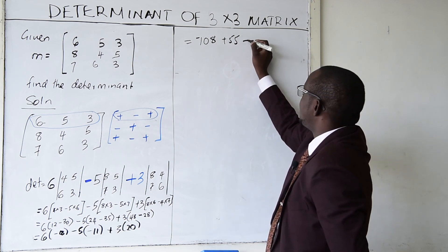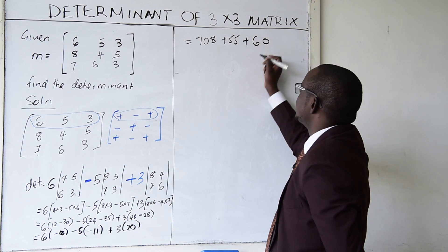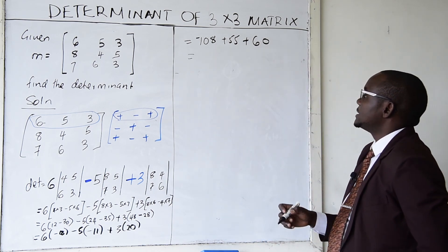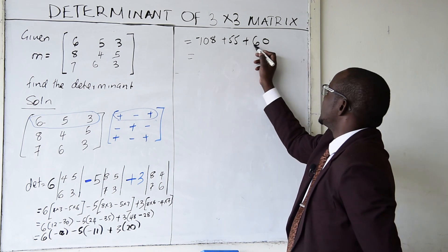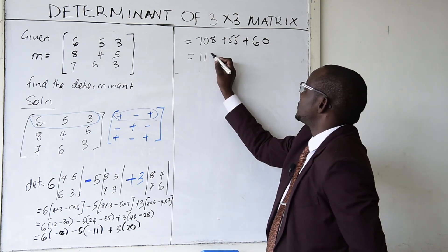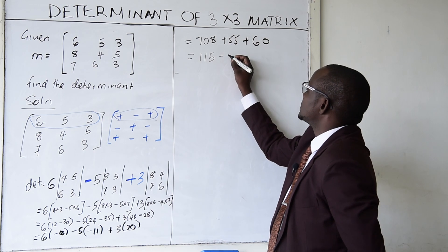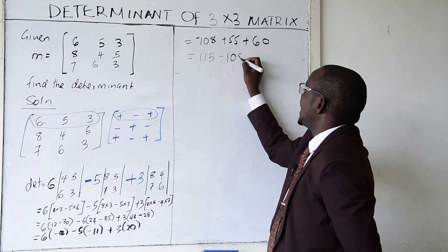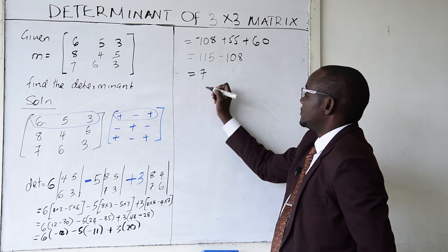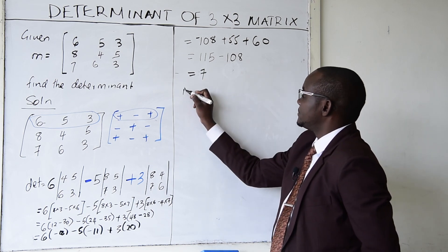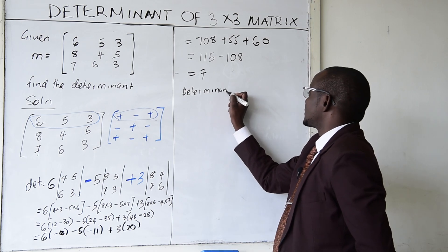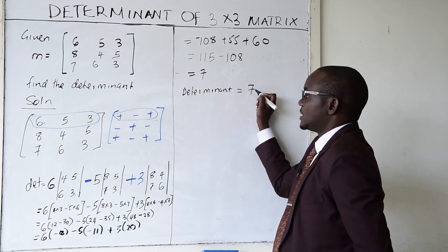Further simplification: −108 plus 55 plus 60. This becomes 115 − 108 = 7. So the determinant equals 7.